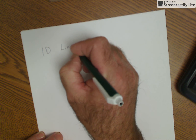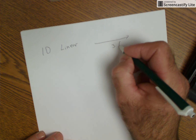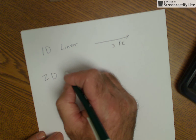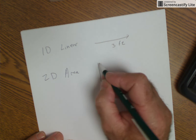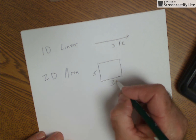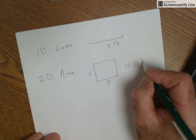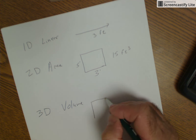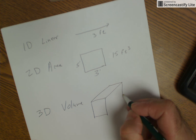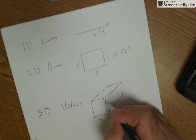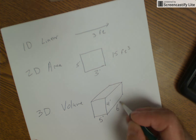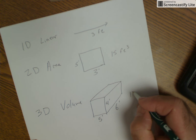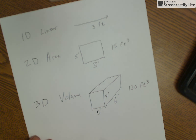Let me run through this one last time. One-dimensional space is a linear measurement — just use a tape and figure out the length, say 3 feet. Two-dimensional space is area: base times height, like 3 times 5 feet equals 15 square feet. Three-dimensional space is volume: base times height times depth, like 5 times 4 times 6 feet deep equals 120 cubic feet. Keeping track of units is really key.